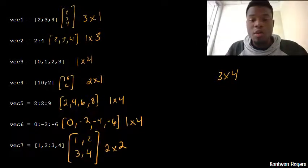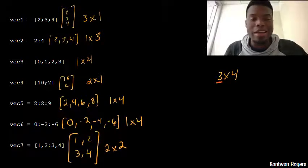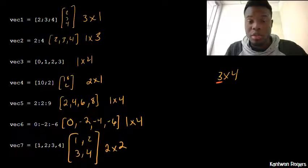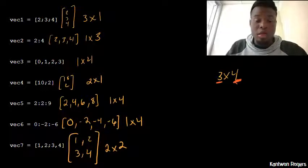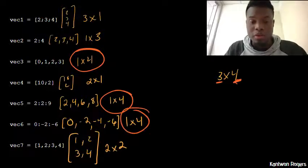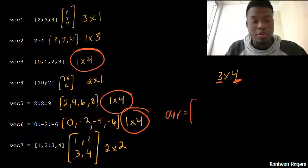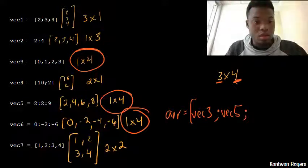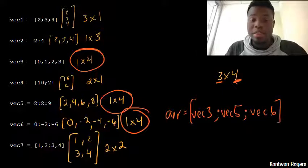Now we know we need three rows overall. Ideally we want three row vectors each with four columns, so when we stack them on top of each other we get a three by four array. Looking at what we have, vec3 is a one by four, vec5 is a one by four, and vec6 is also a one by four. So we can just vertically concatenate these together. The code would be: array equals vec3 vertically concatenated with vec5, vertically concatenated with vec6. The order doesn't matter in this case since no specific order was requested, but this is one possible solution.